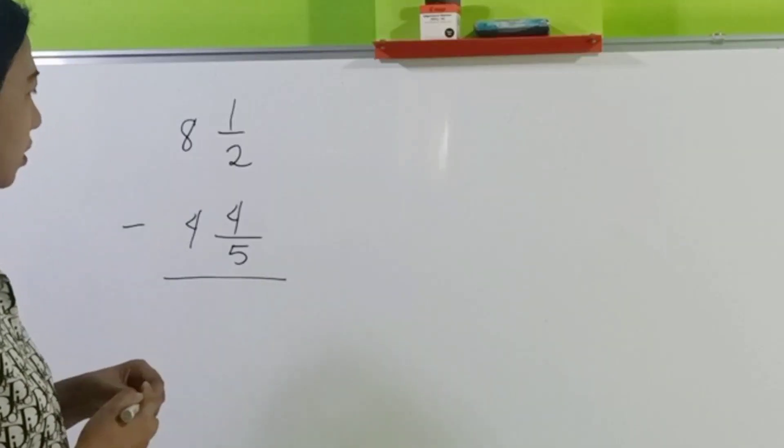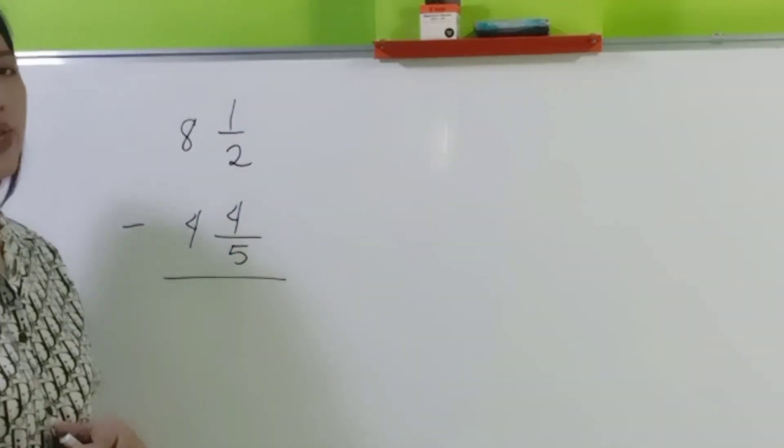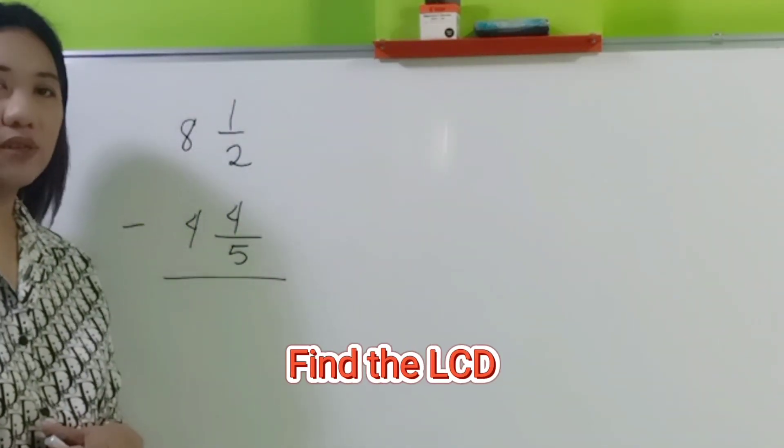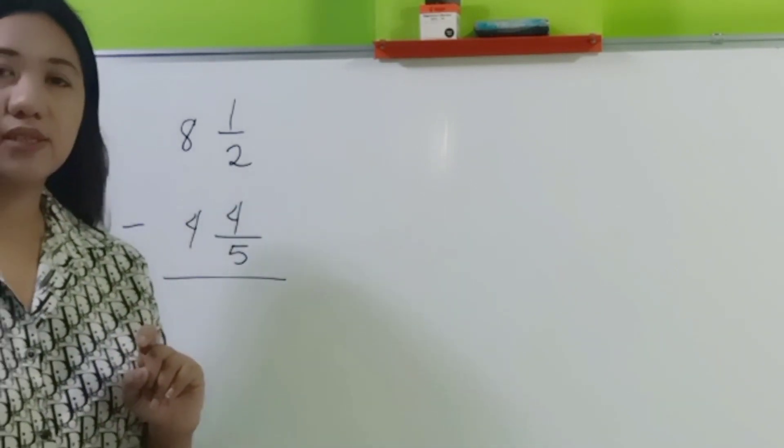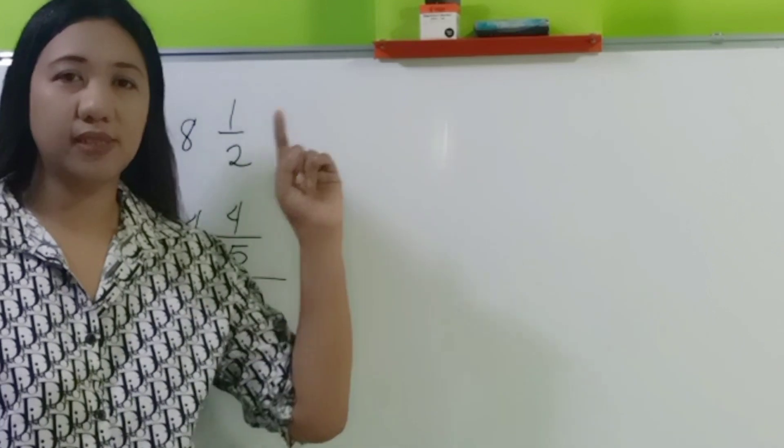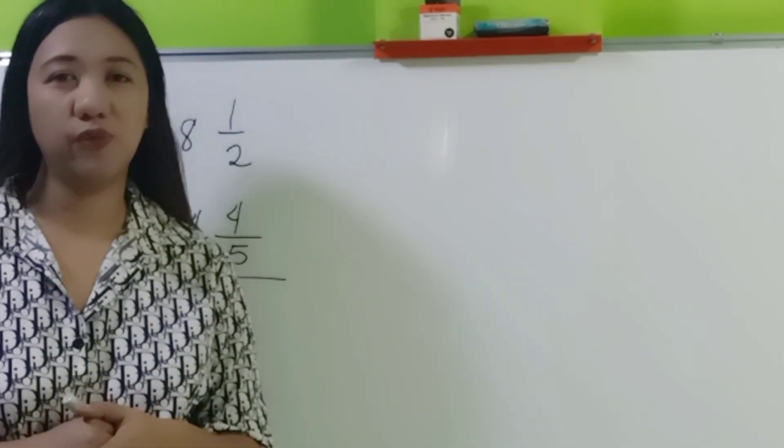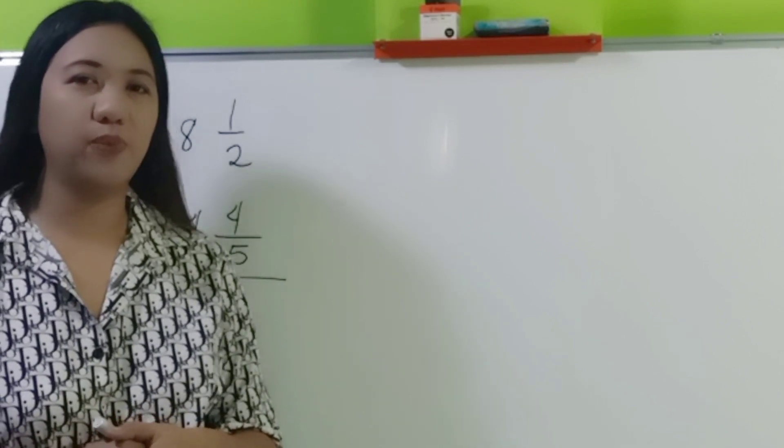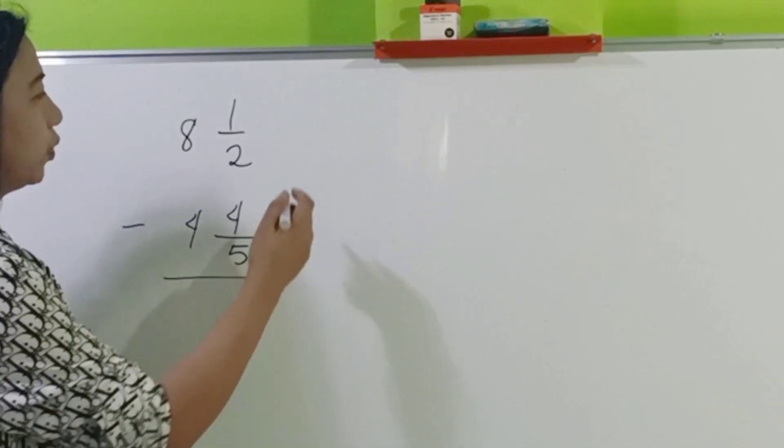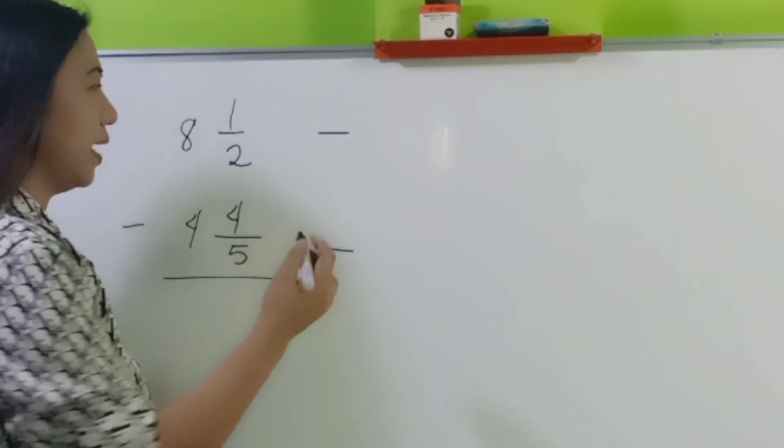So we have here a pair of mixed numbers. Step one, find the least common denominator. If you are not still familiar with the least common denominator, just visit the link above and it will show you how to solve for the LCD or the least common multiple. So going back, what's the LCD of 2 and 5? It's 10.